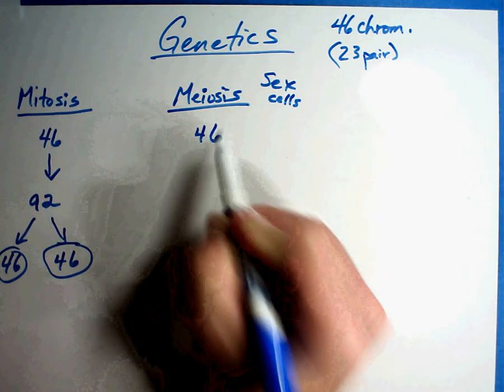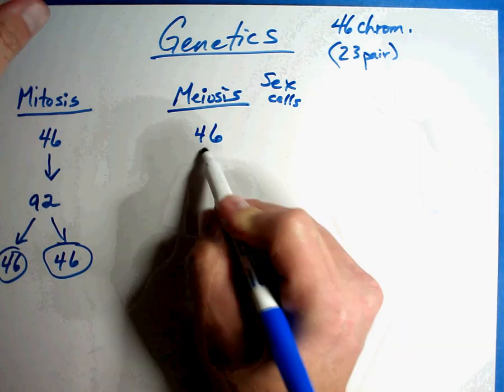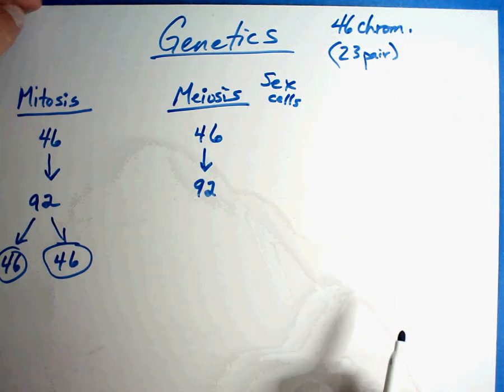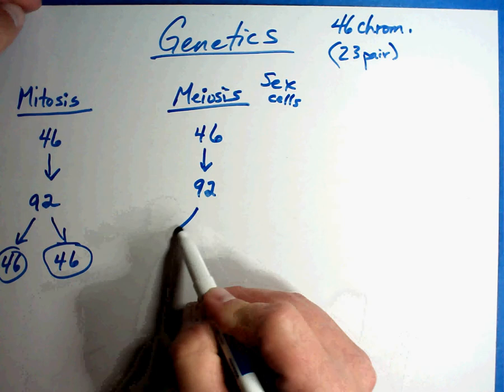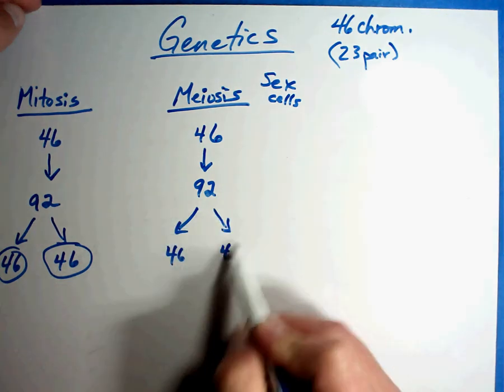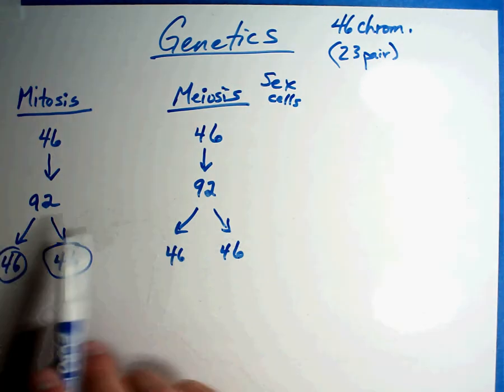You're going to take a cell that has 46 chromosomes, and all human cells have 46 chromosomes. The first thing you're going to do is double your DNA because you need to make duplicates. And then you're going to split that into 46 chromosomes and 46 chromosomes. You'll notice it looks just like the one on the left, mitosis.